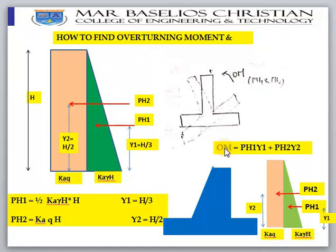To summarize: the overturning moment is pH1 × y1 + pH2 × y2. We now know how to calculate pH1, y1, pH2, and y2. Let us now move on to the restoring moment.